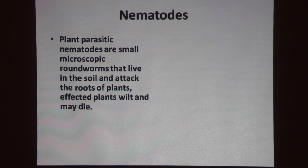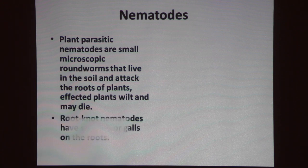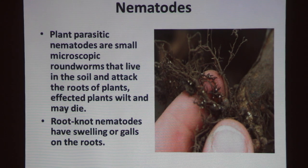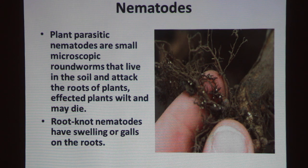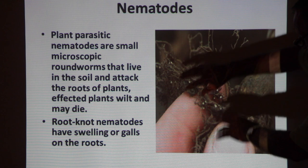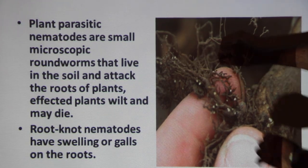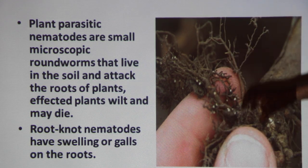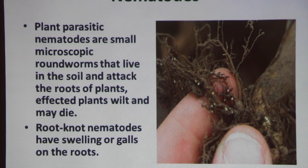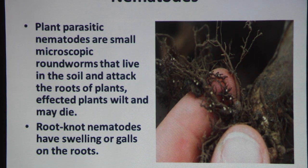Now we're talking about nematodes. Plant parasitic nematodes are small, microscopic roundworms that live in the soil and attack the roots of plants. Affected plants wilt and may die. Root-knot nematodes have swellings or galls on the roots, as this photo shows. This can be a big problem because once you have a nematode problem, the roots — which feed the plants — are destroyed, so the plant no longer receives water and nutrients and starts to wilt and die.